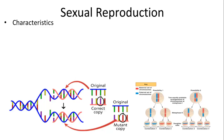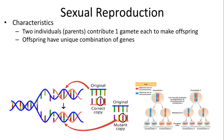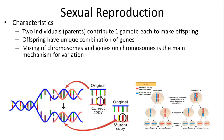Sexual reproduction, on the other hand, involves two individuals which each contribute one gamete — a sperm and an egg — to make an offspring. The offspring have half the genes from their mother and half from their father in a new combination, so they are unique. The mixing of chromosomes and genes on the chromosome is the main mechanism for variation, which occurs through meiosis — crossing over, independent assortment, segregation, all things studied in Bio 1.